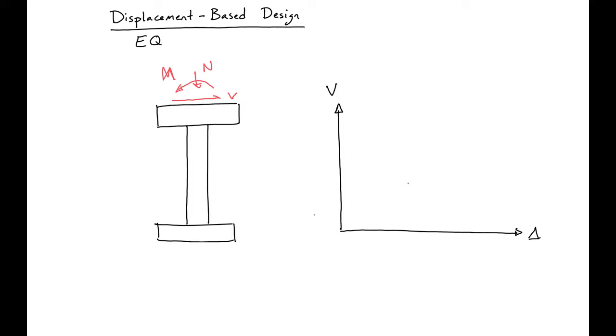So what will happen to this column is we'll have some kind of displacement which will draw our displaced column in blue. And let's call this distance to our blue column there delta.